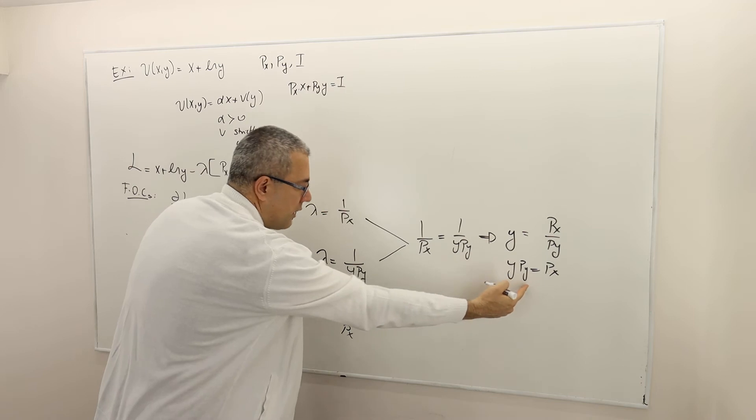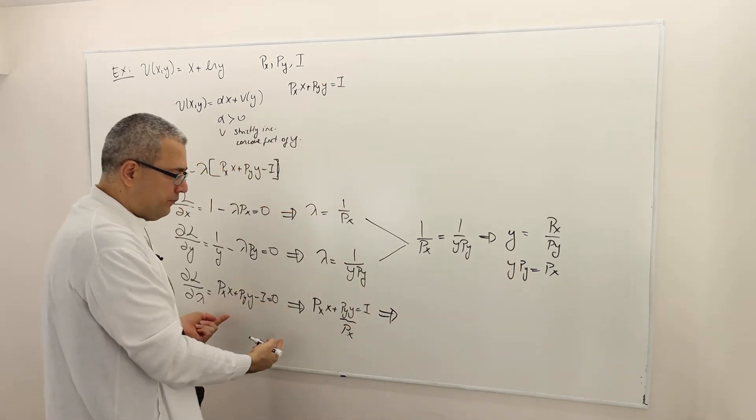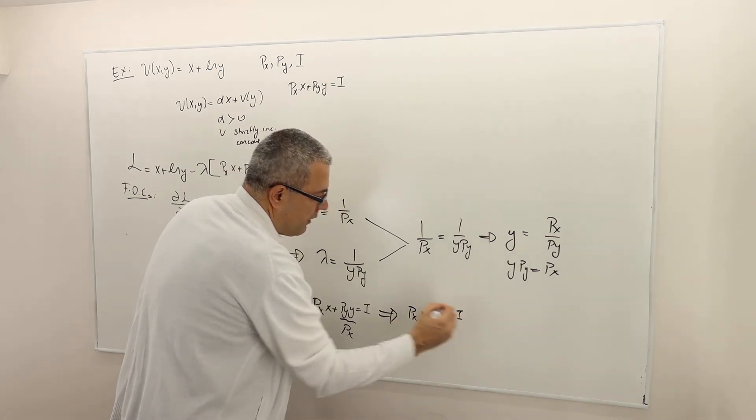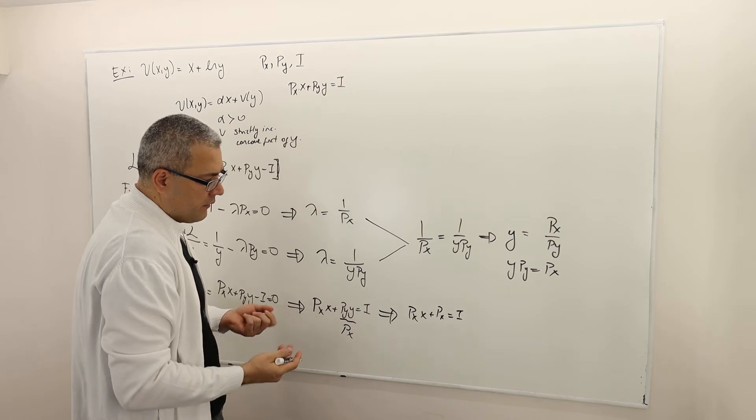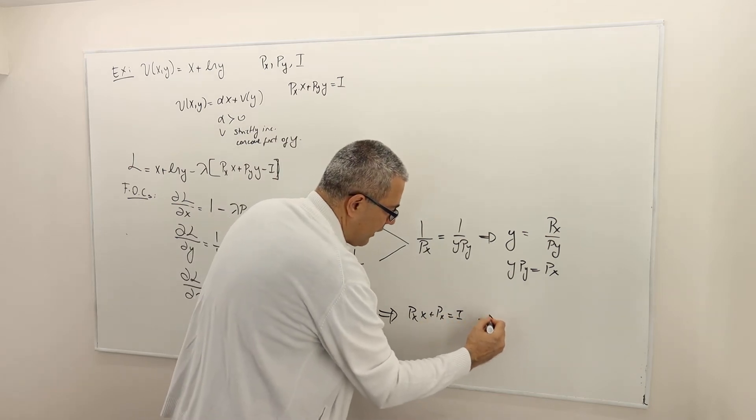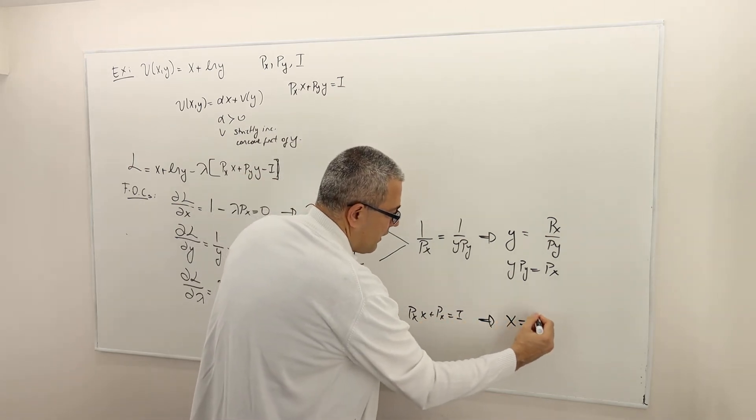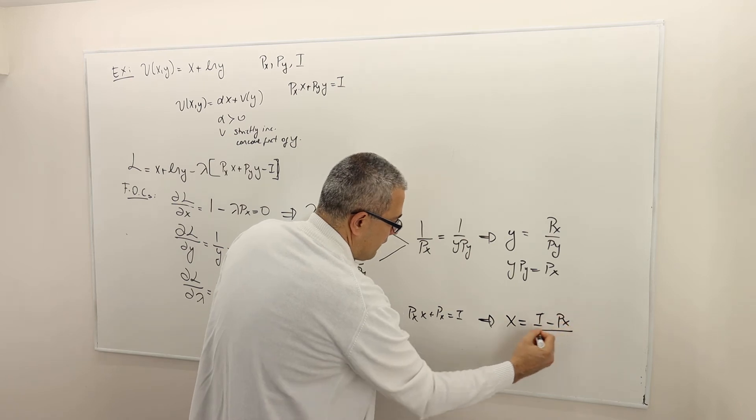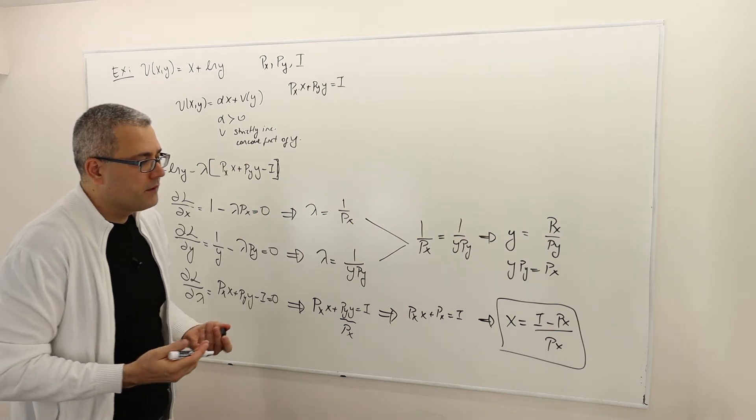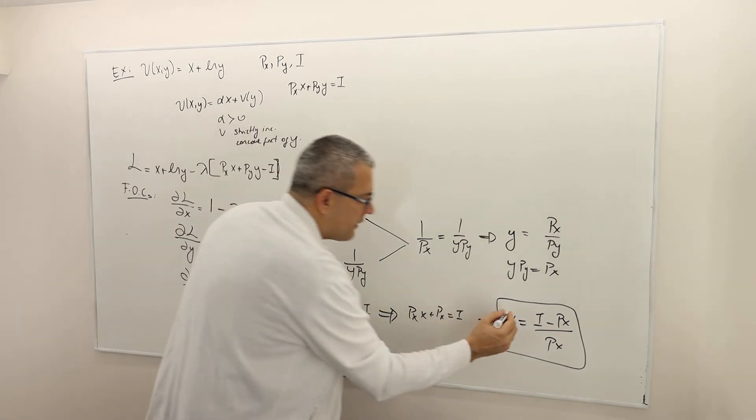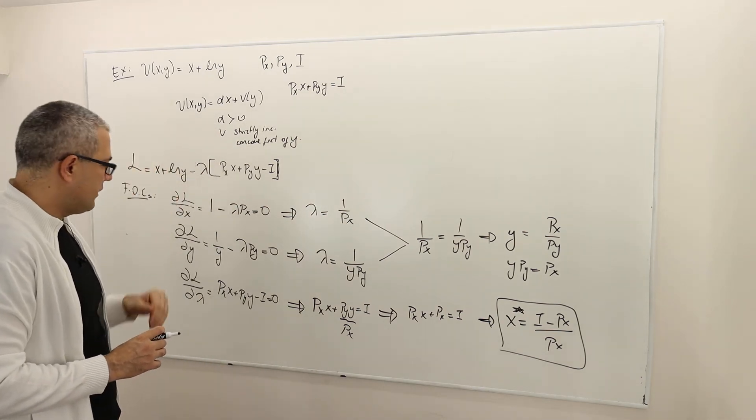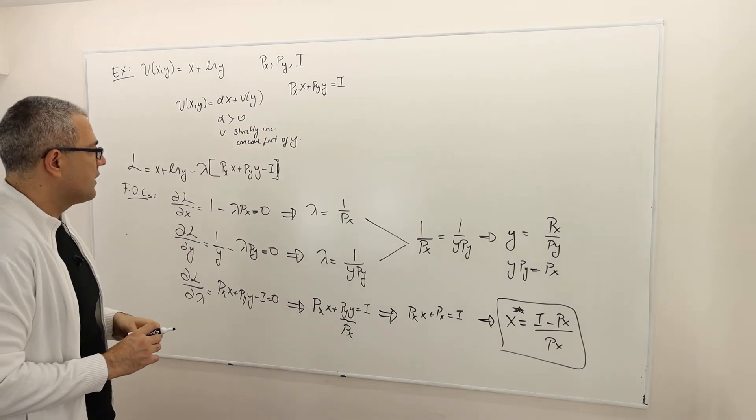Therefore, when I plug this into my budget constraint or the third equality, I have px·x plus px equals income. So what I need to do is solve for x. That means send everything else to the other side, which means income minus px divided by px is going to give me what I want. So that's basically x star. This is the optimal amount of good x this agent is going to consume, or this is the optimal x star point.